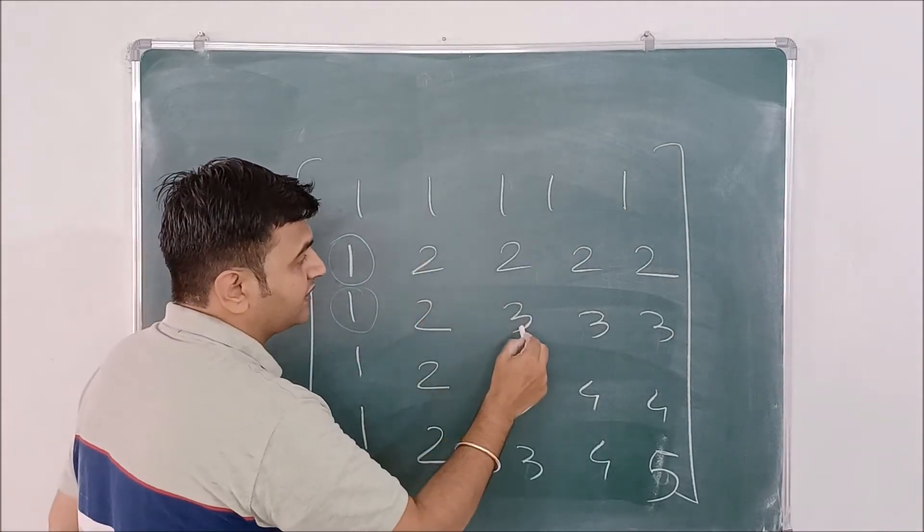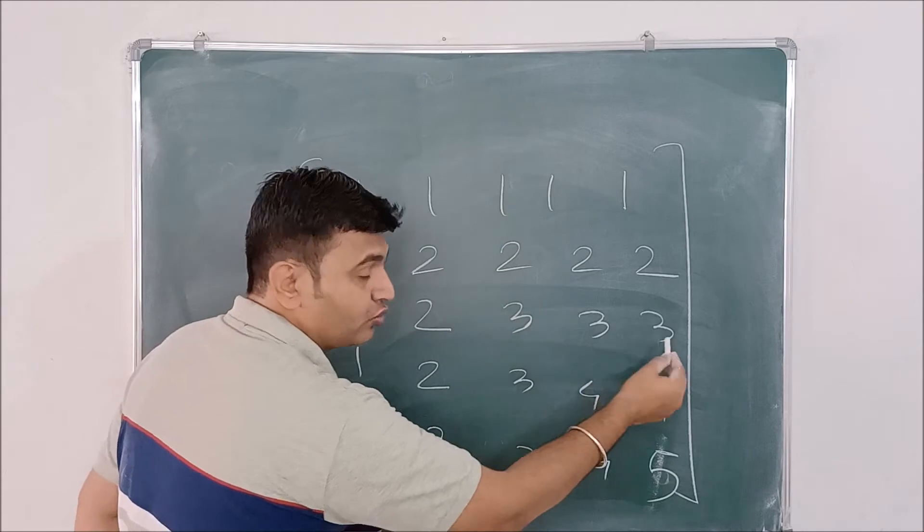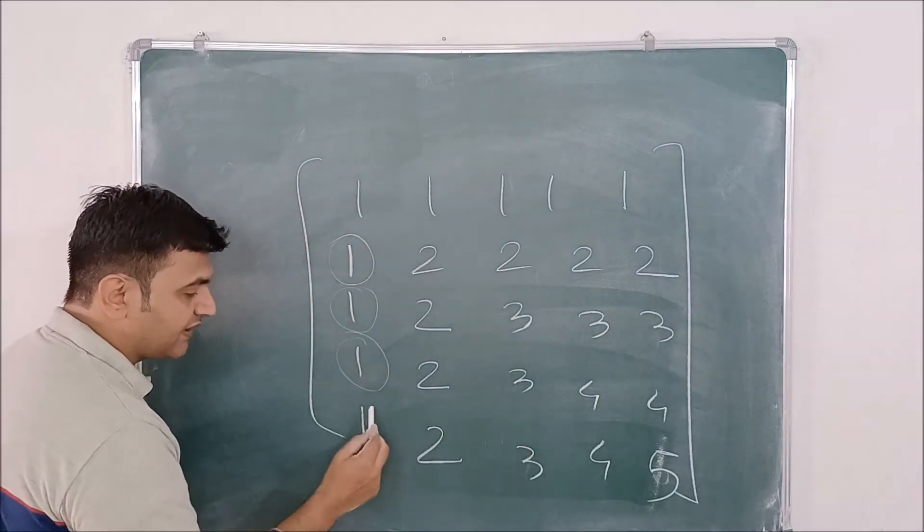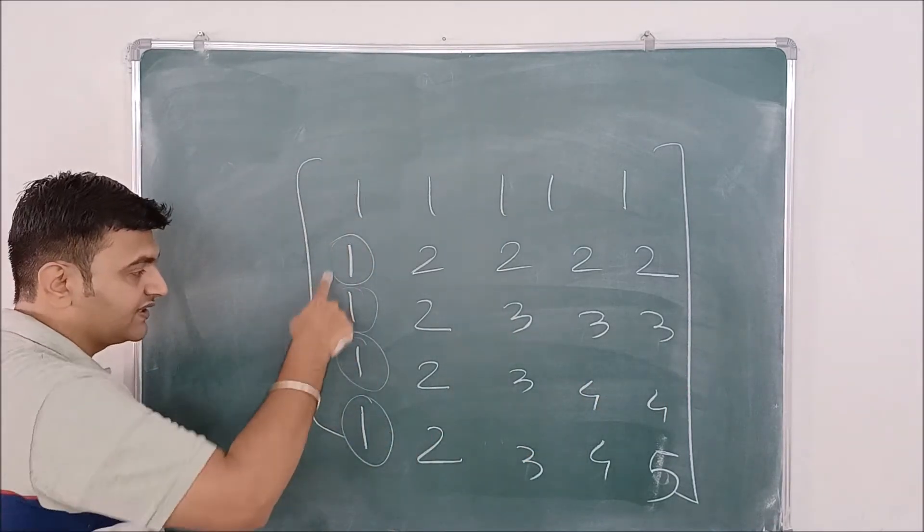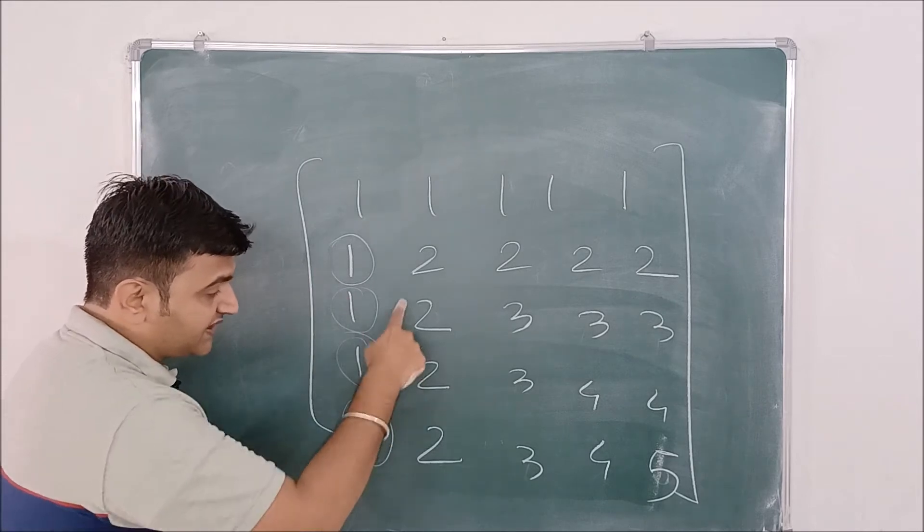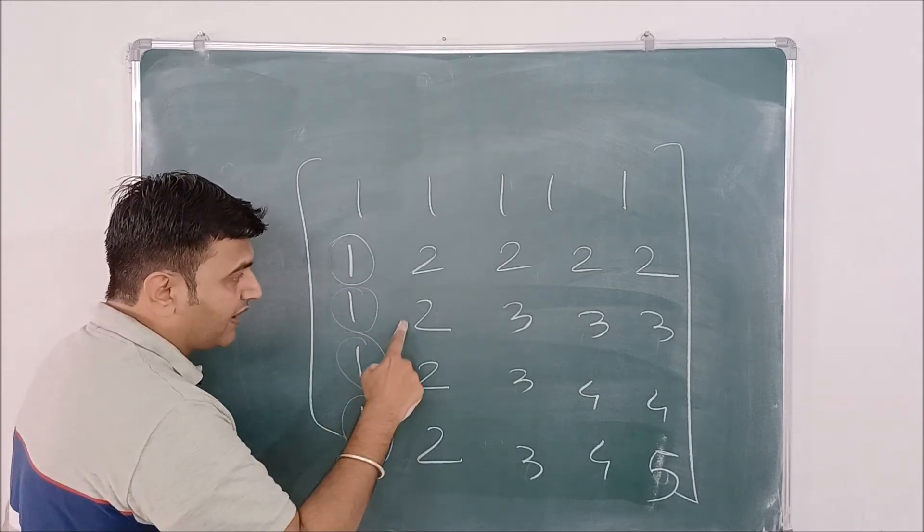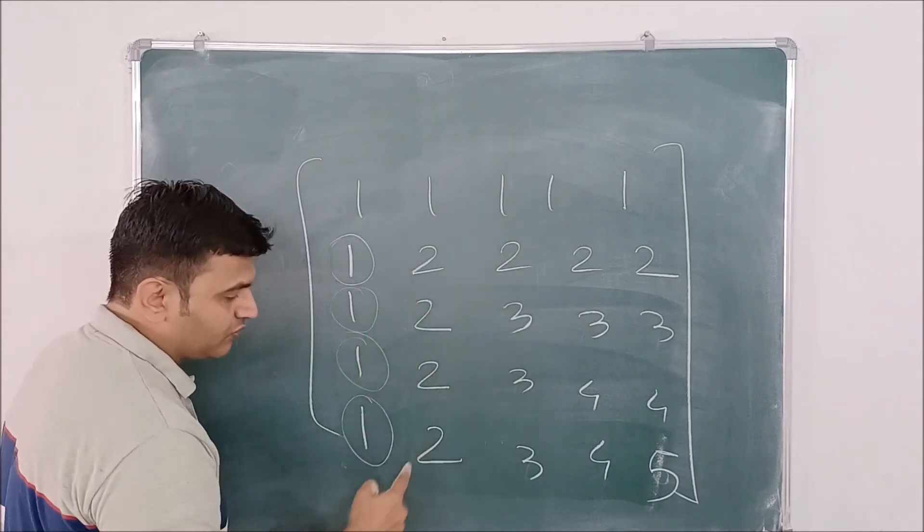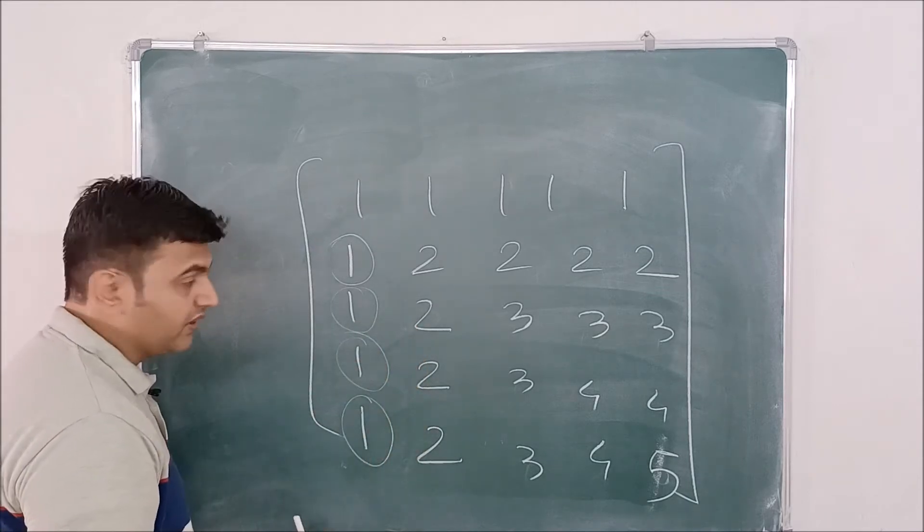This will be one. This will be three minus one is two, two, two. Then you do R4 minus R1, R5 minus R1. So all these entries will be zero, but this will be non-zero. Then again, you will do R3 minus R2, R4 minus R2, and R5 minus R2.